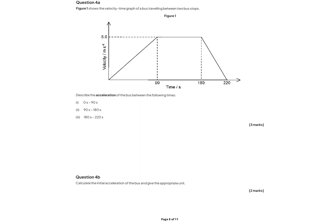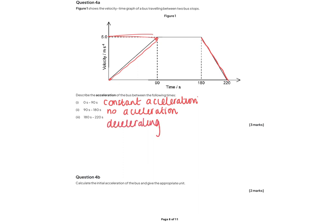Question 4a gives a velocity-time graph of a bus travelling between two bus stops. Note this is a velocity-time graph, not a displacement-time graph. From 0 to 90 seconds, it is a straight line, meaning constant acceleration. Between 90 and 180 seconds, the velocity stays constant at 5 metres per second, so there is no acceleration. After 180 seconds, a straight line coming down means the bus is decelerating at a constant rate.